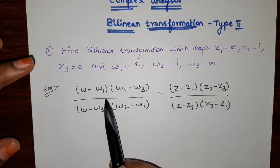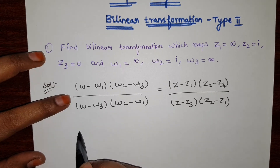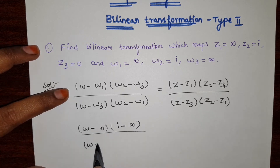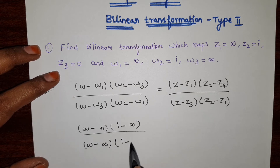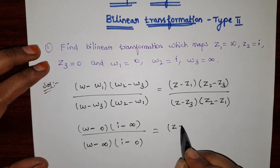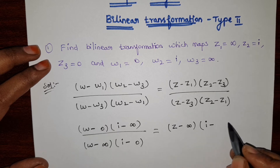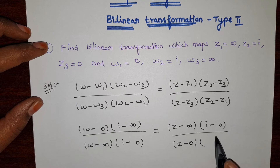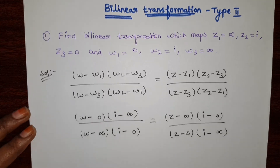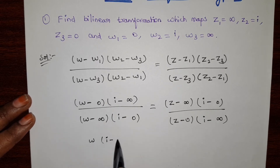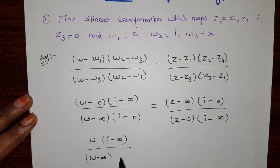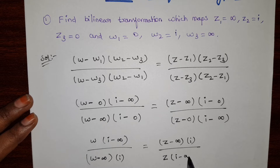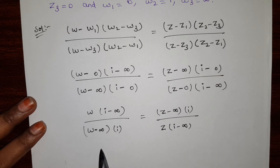Using this formula we can solve the problem. Substituting the values — w1 is 0, w2 is i, w3 is infinity, z1 is infinity, z2 is i, z3 is 0 — and simplifying, it becomes w into (i minus infinity) over (w minus infinity) into i, and z minus infinity into i. Just removing the zero terms from the previous steps.